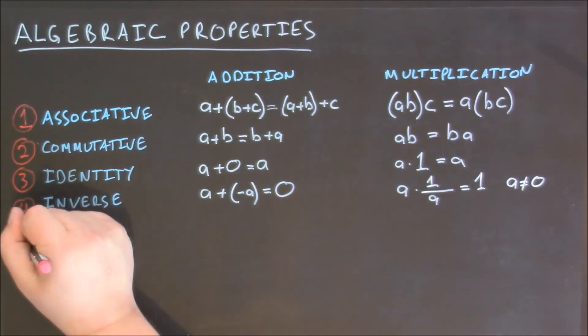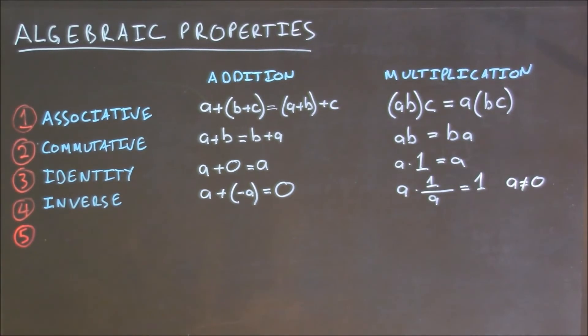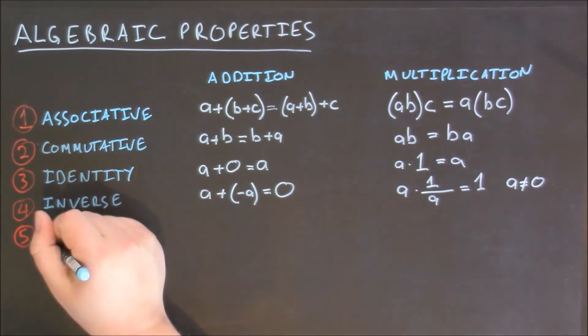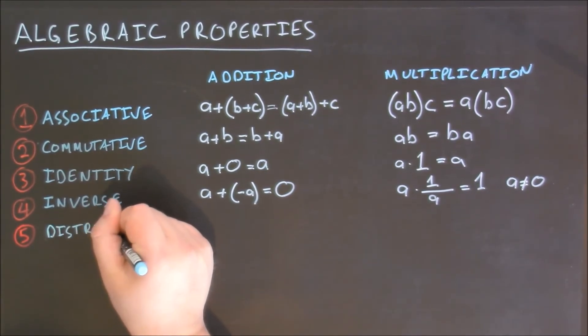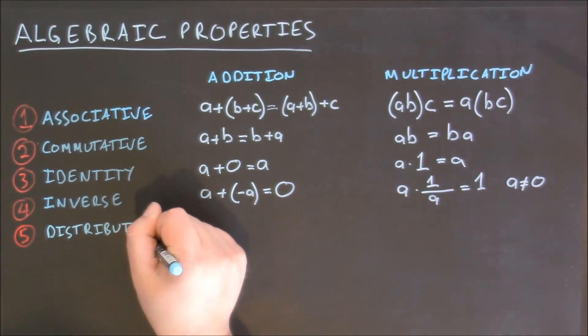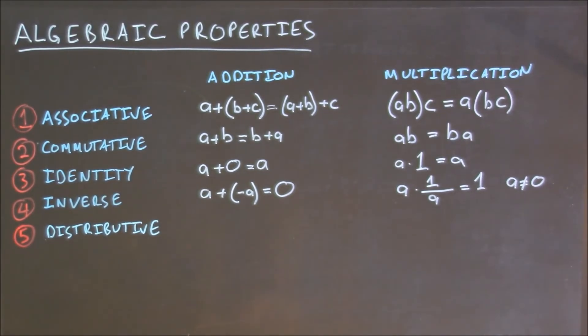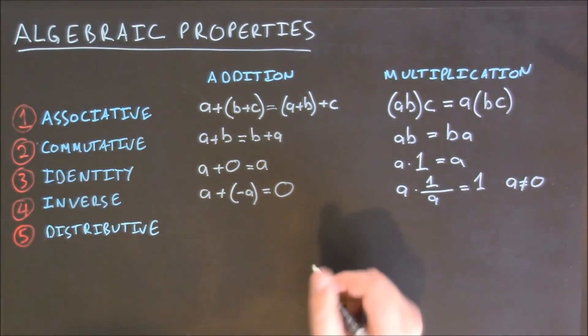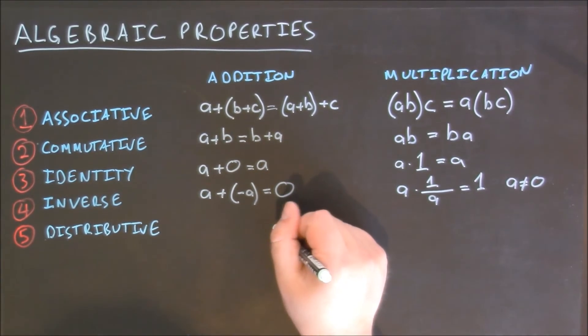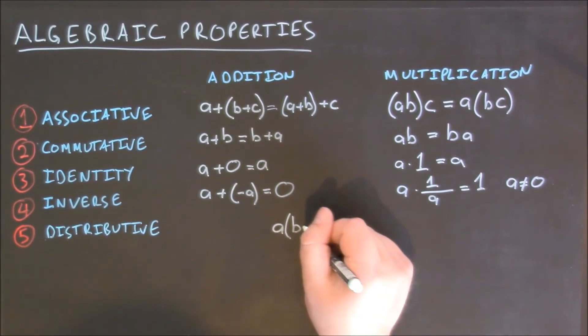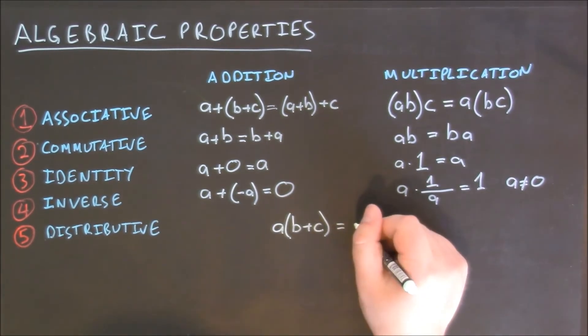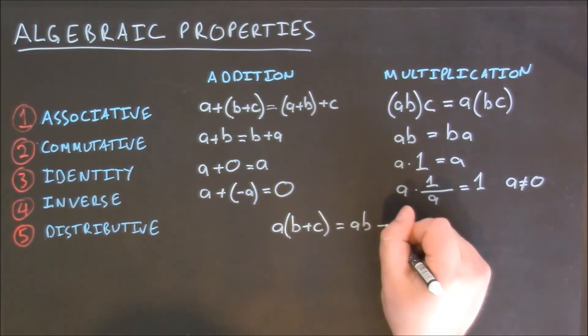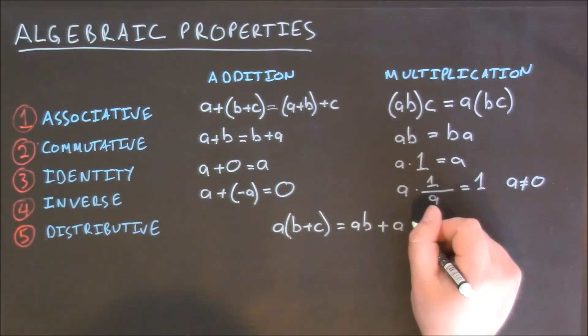The fifth property combines both addition and multiplication and is known as the distributive property. The distributive property states that if I have a multiplied by the quantity b plus c, I can rewrite this as a times b plus a times c.